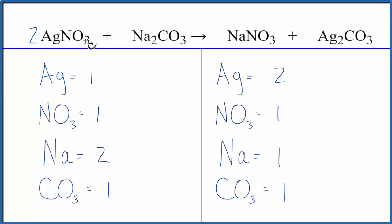We could put a two in front of the silver nitrate. This applies to everything, so we have one times two. That gives us two silvers. Those are balanced. And then the two applies to our one nitrate, so one nitrate times the two. That gives us two nitrates.